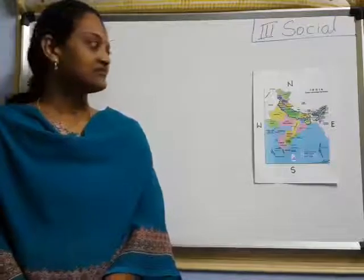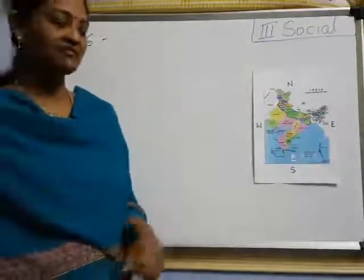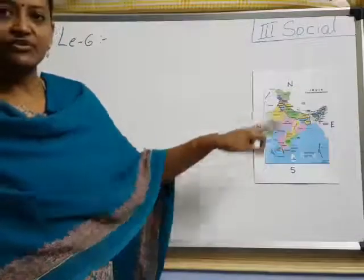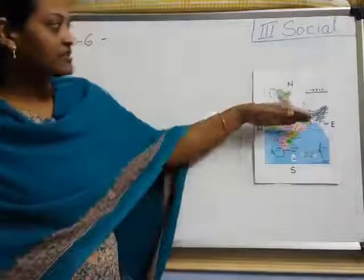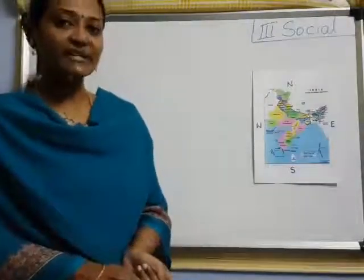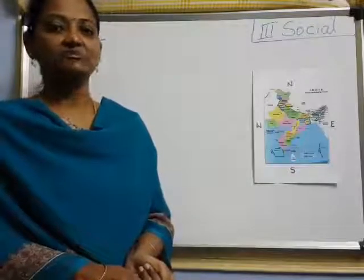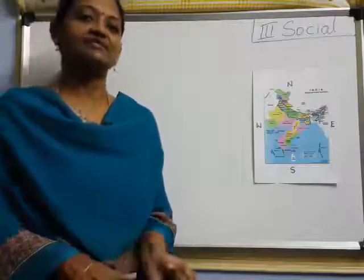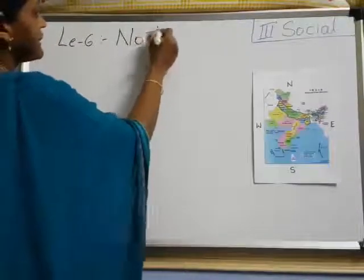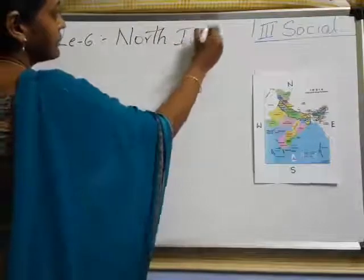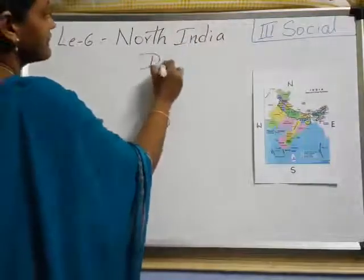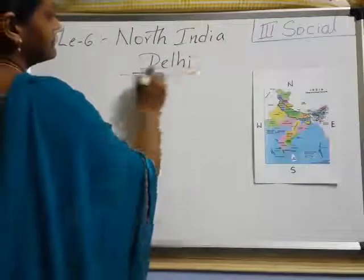Now, where does it lie? Do you know in the India map where it lies? I will show you that in the India map. It is towards the north side. So the important city towards the north of India is nothing but Delhi.